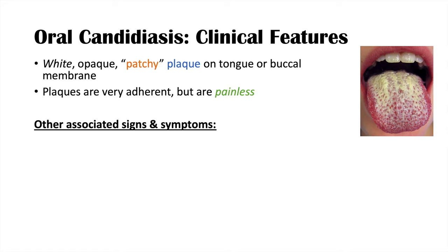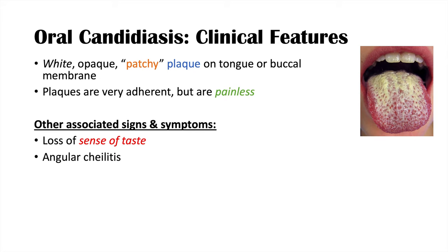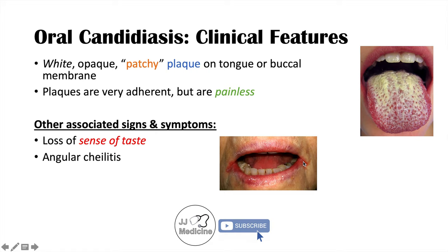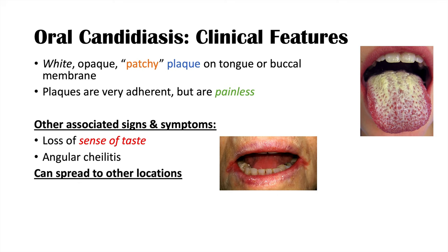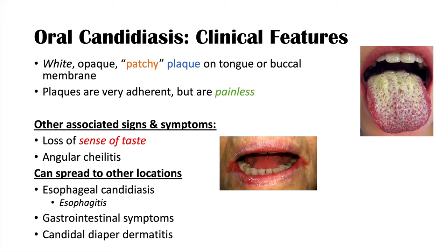Other associated signs and symptoms include loss of sense of taste, as the plaque blocks taste receptors. Angular cheilitis — inflammation of the corners of the mouth — can also occur; it can be painful and itchy and is associated with iron deficiency. Candida albicans can spread to other locations, including the esophagus, causing esophageal candidiasis and esophagitis, as well as gastrointestinal symptoms. In children, candidal diaper dermatitis may also be present, so it's important to check the diaper area.